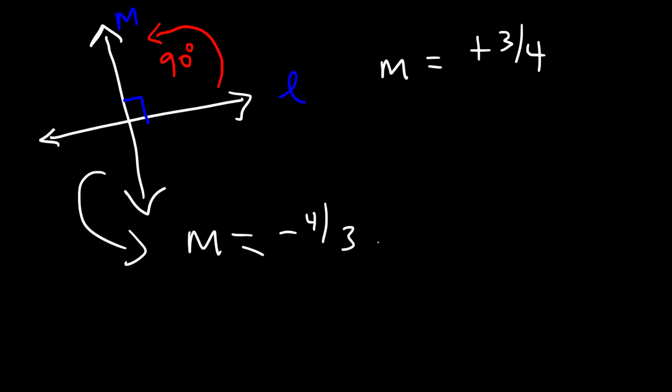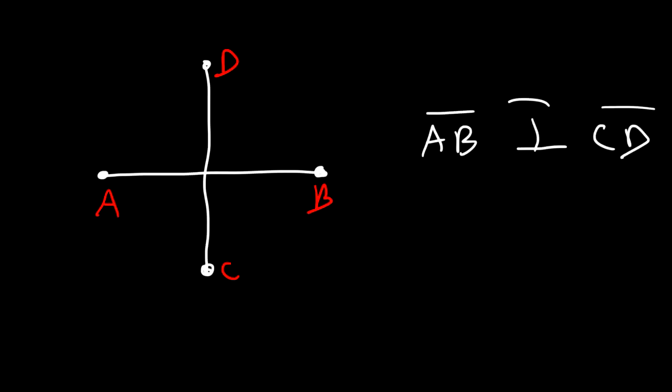Lines aren't the only things that can be perpendicular to each other. Segments and rays can be perpendicular to each other. So let's say that's segment AB and this is segment CD. If segment AB is perpendicular to segment CD, we can write AB ⊥ CD. That's the perpendicular symbol, and therefore the angle between these two segments will be 90.